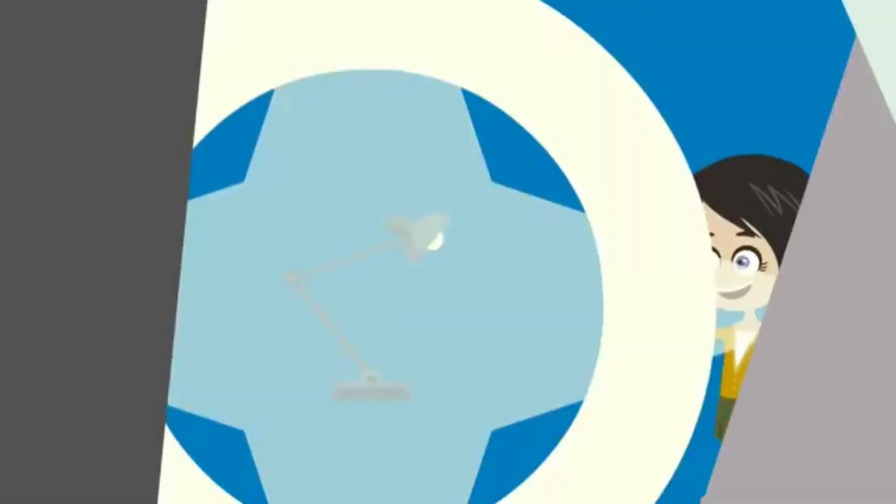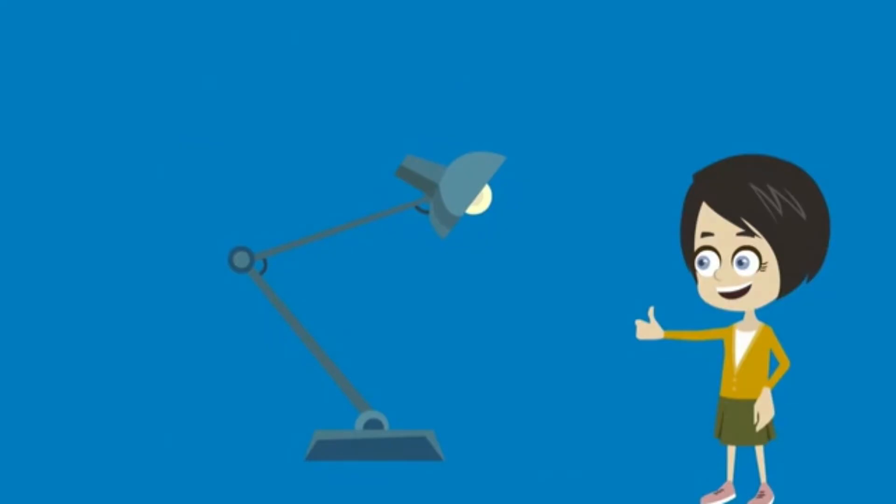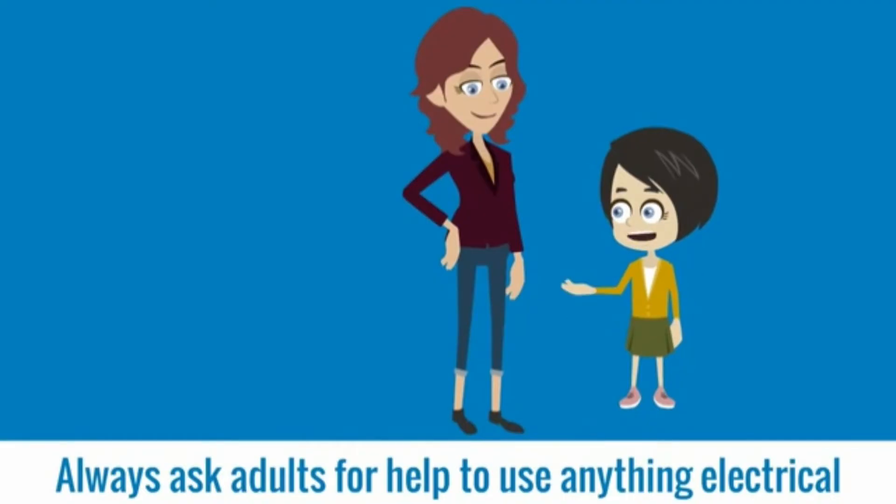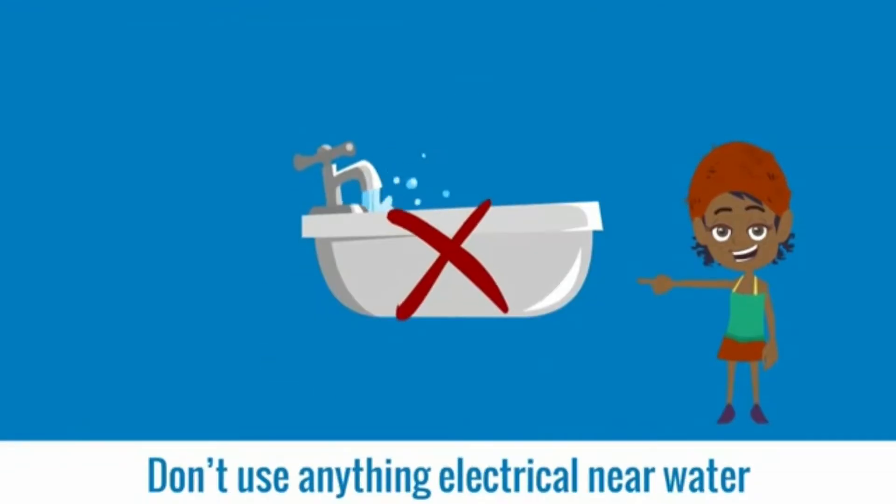Severe electric shock can kill. Electricity is safe as long as we are aware of the dangers and follow safety tips. Let's look at some safety tips for inside your home. Always ask adults for help to use anything electrical. Don't use anything electrical near water or if you have wet hands or are standing in water.